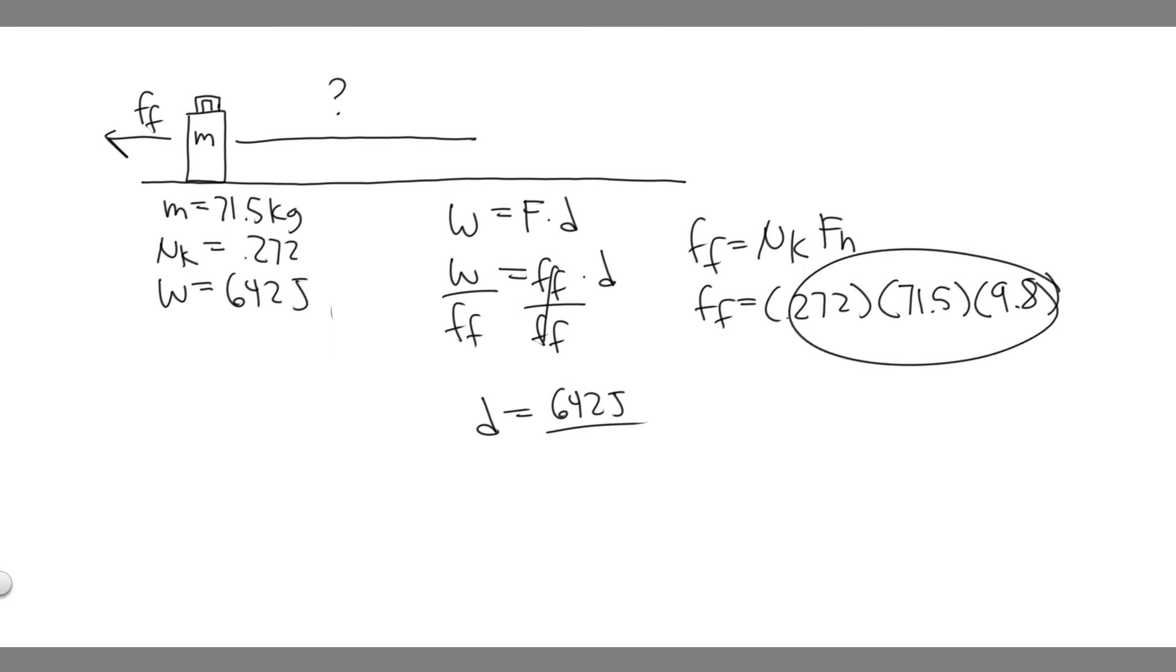So this is just going to be the force of friction. You have mu sub k times F sub n, which is just mg, because we only have mg going down, so we just know they're going to be equal. So we can divide by this, so plugging in the force of friction: 0.272 times 71.5 times 9.8.